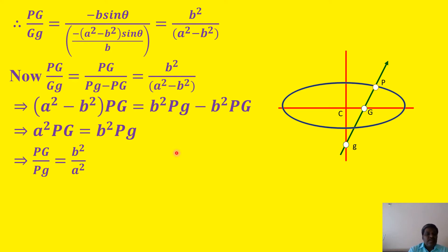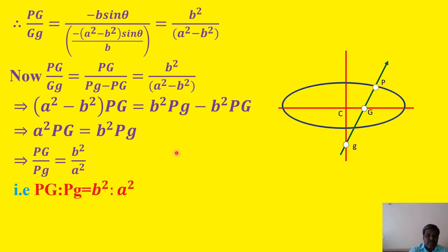So PG:Pg = b²:a². Hence proved. Let us see the next property.